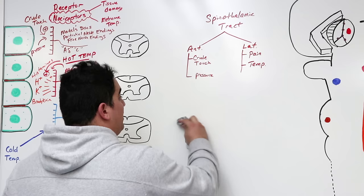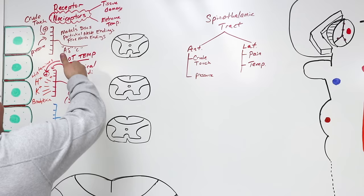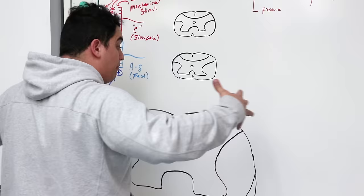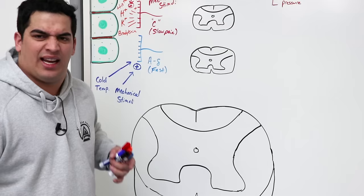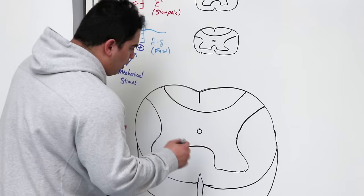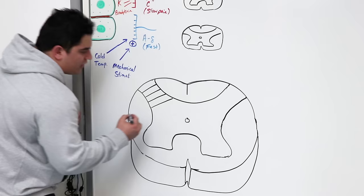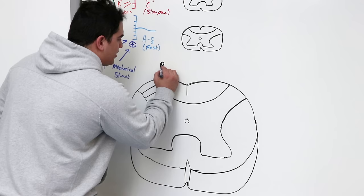Now we know what this tract responds to and the receptors involved. Next we talk about how it enters the spinal cord. Looking at a cross section of the spinal cord, they section it out into what's called Rexed laminae — if you really want to know, they're called Rexed laminae — numbered 1, 2, 3, 4, 5, and so on.